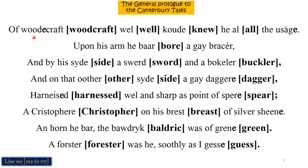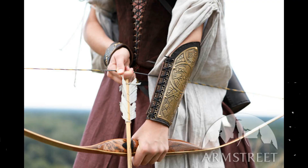Woodcraft well known — he knew all the usage. 'Woodcraft' is skill related to forest work, well known means he was very skilled at it. 'Usage' means practice — he had a lot of practice. Upon his arm he bore a gay bracer. 'Bracer' means a bazu band — an arm guard. I am putting a picture so you will understand. It is used when you shoot a bow so the bowstring does not hurt your arm.